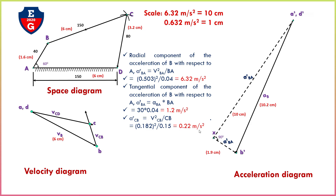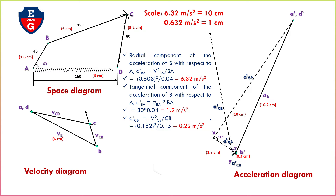Convert this value according to our scale in centimeters: 6.32 meter per second square equals 1 centimeter, so 0.22 meter per second square gives a value in centimeters. Draw a parallel line from this link — this is the radial component of link BC with a length of 0.3 centimeters as per the scale. From this, draw vector Y for the tangential component A T CB, whose magnitude is unknown. Now draw the remaining final link, which is link CD, and find its radial component.